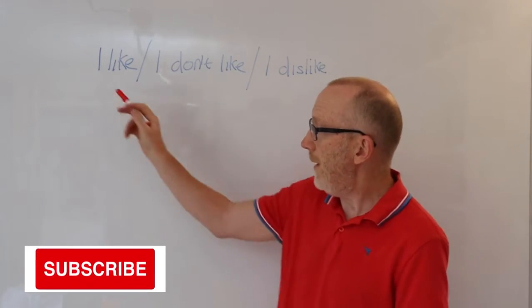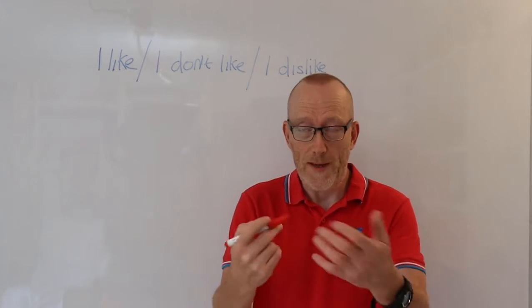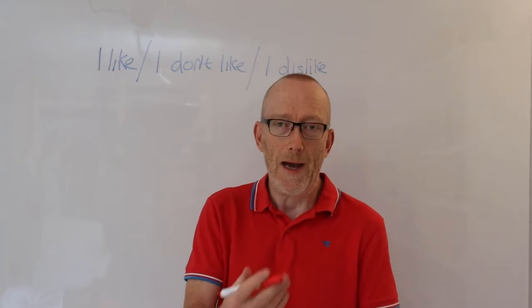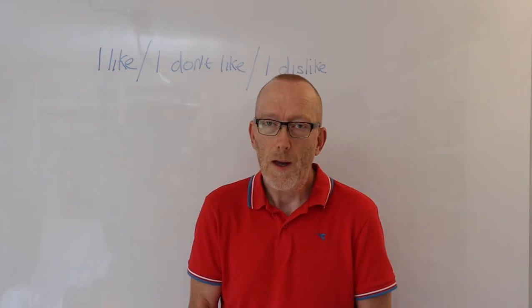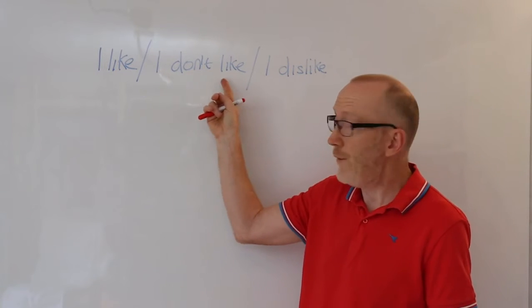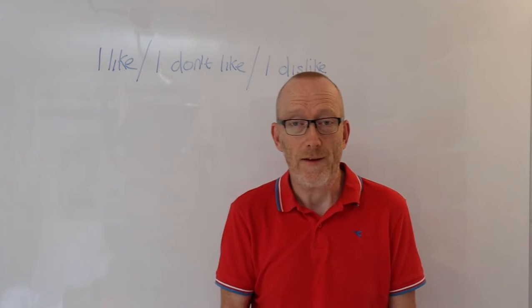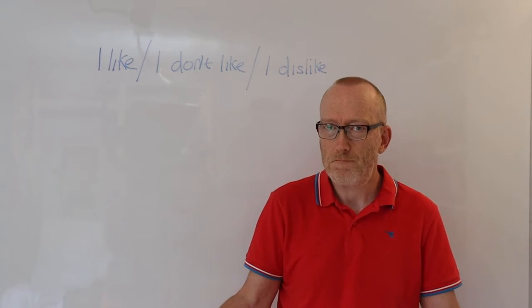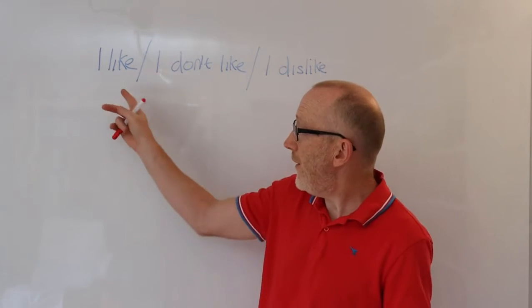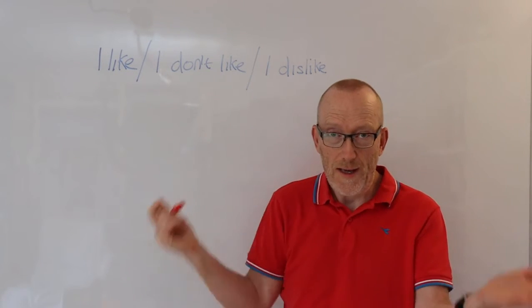Now obviously like is a positive sentence or would be used in a positive sentence. Say for example, I like pizza. Whereas if you don't like pizza, I don't like, I do not like, that is obviously a negative sentence. I don't like pizza. So it's very simple. I like is positive, I don't like is negative.